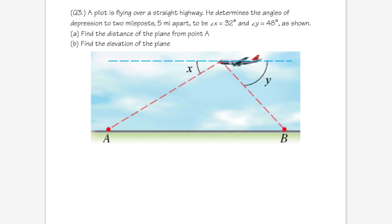Now for a word problem: an airplane is flying horizontally. We know the distance from point A to point B is 5 miles. The angle x = 32° and the angle y = 48° are given. We need to find the distance from the airplane to point A.